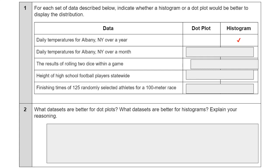Daily temperatures for Albany, New York over a month - because it's a little bit smaller piece of data, we're going to do dot plots. And then the results of rolling two dice within a game, that is going to be dot plots as well. Heights of high school football players statewide - that's a whole bunch of football players because it's a whole state, that's going to be a histogram. And then finishing times of 125 randomly selected athletes for a 100 meter race, that's going to be a histogram. Now I'm like freaking out because I think I said dot plot for the last one, but it's histogram. Anyways, all the answers are there.